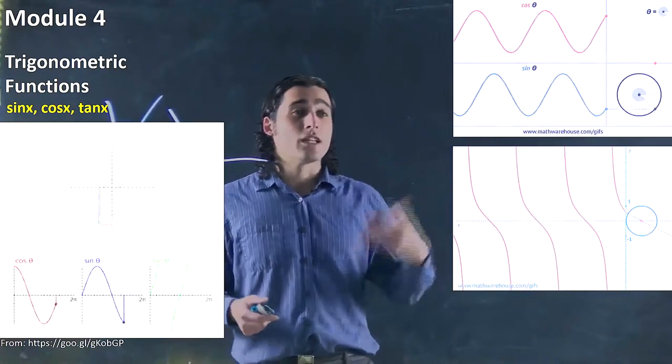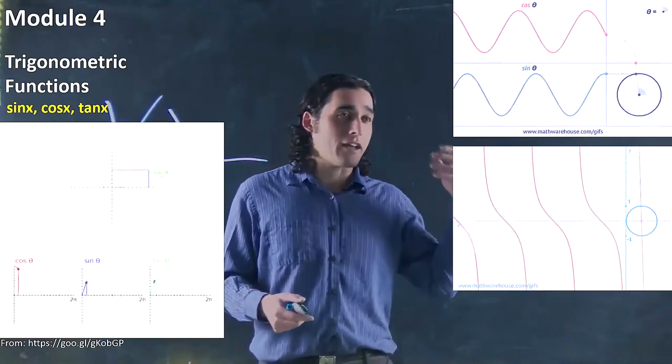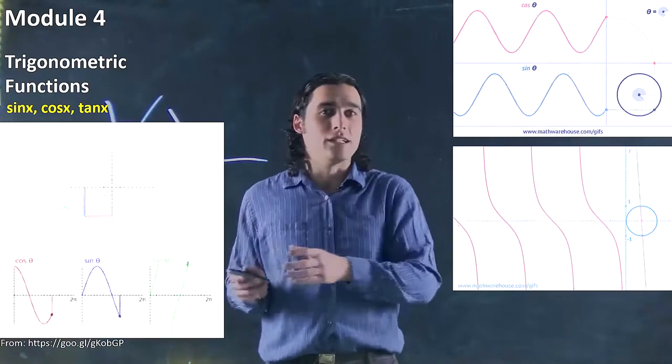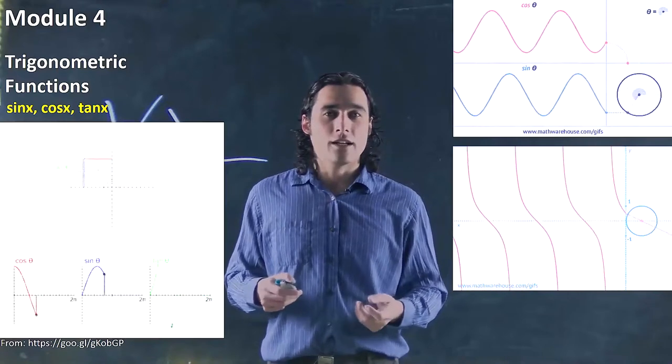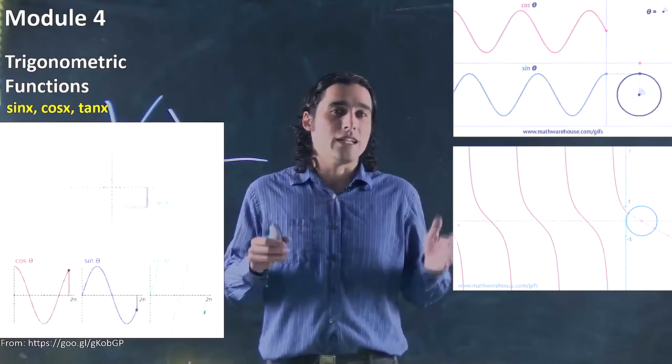a period later, it's going to repeat itself. Then a period after that, it repeats itself. If we go a period the other way, it would repeat itself. So it would be an infinite number of solutions if the range is not defined. And the range will actually define how many solutions we get.